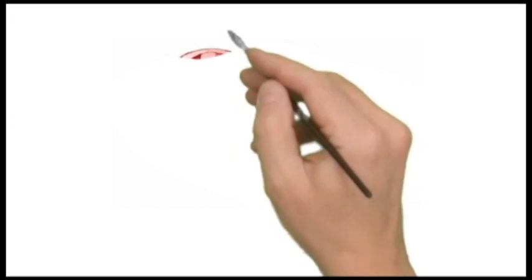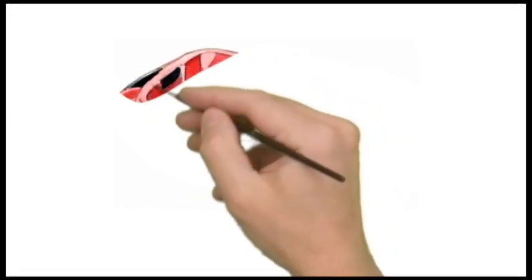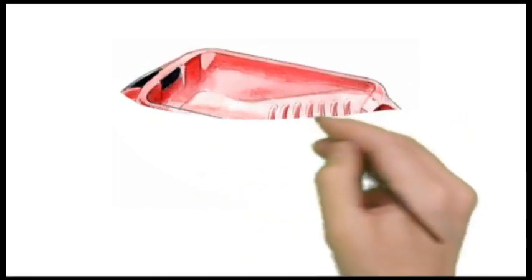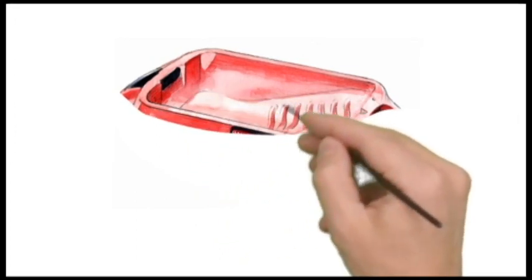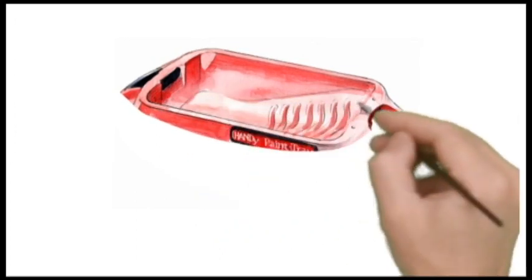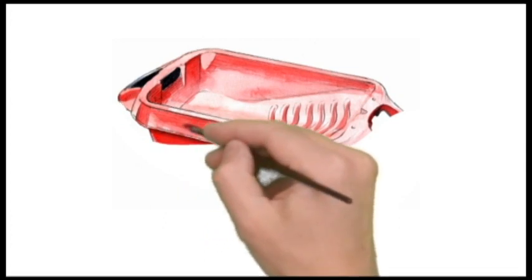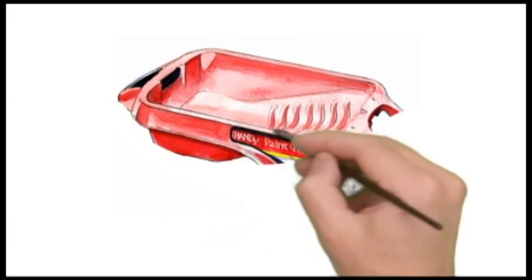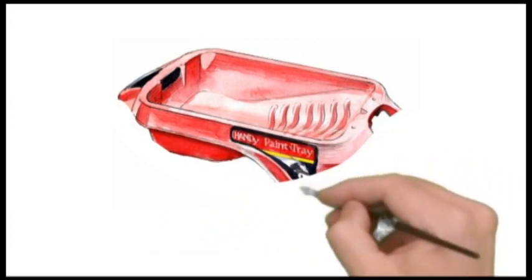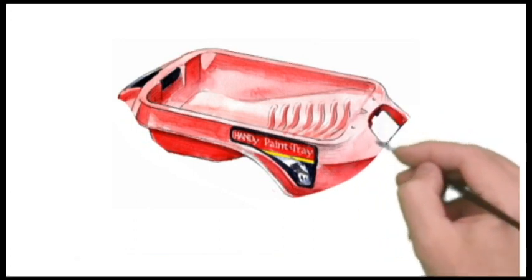Our Handy Paint Tray makes a vast improvement over the traditional tray. This deep tray holds up to a gallon of paint or stain and ergonomic handles make for easy transporting without the fear of spilling. The magnetic brush holder accommodates up to a 3 inch brush and corner spouts allow for easy pouring.